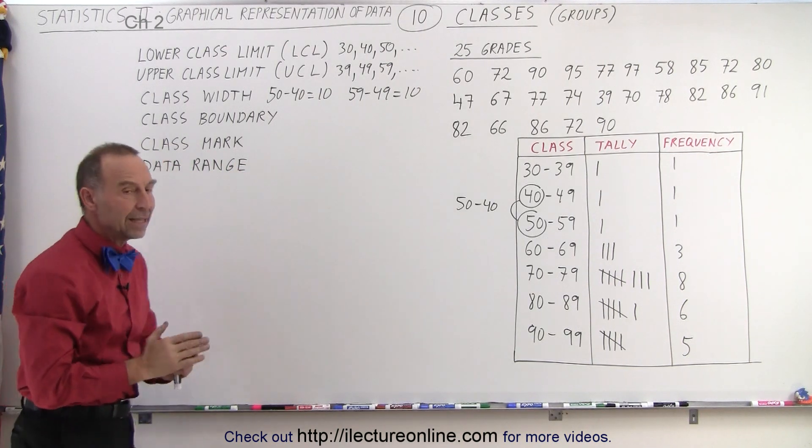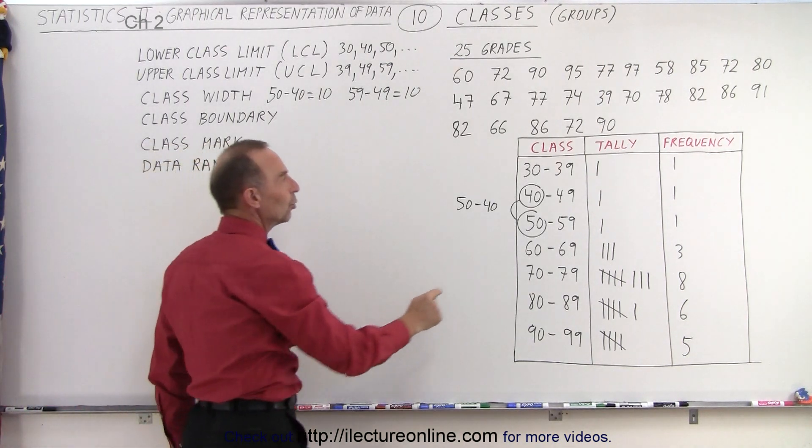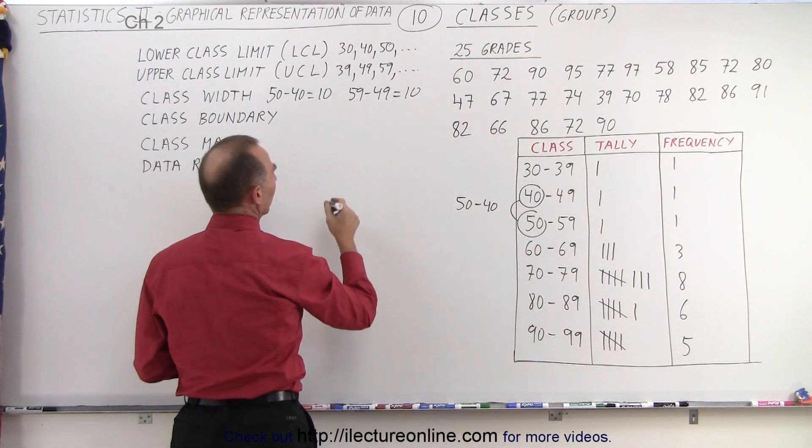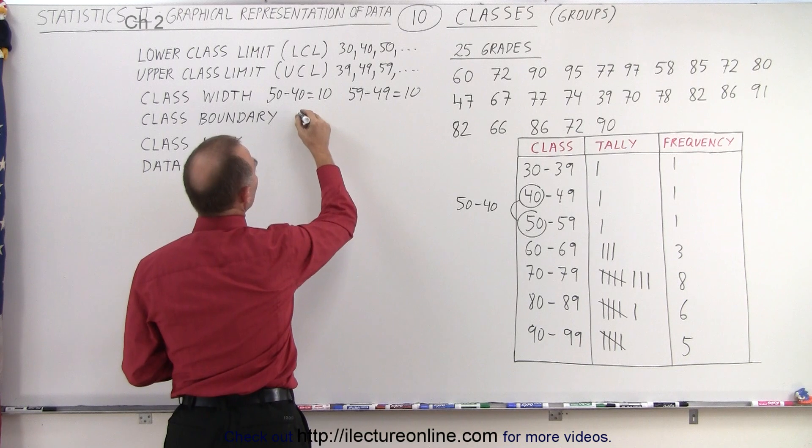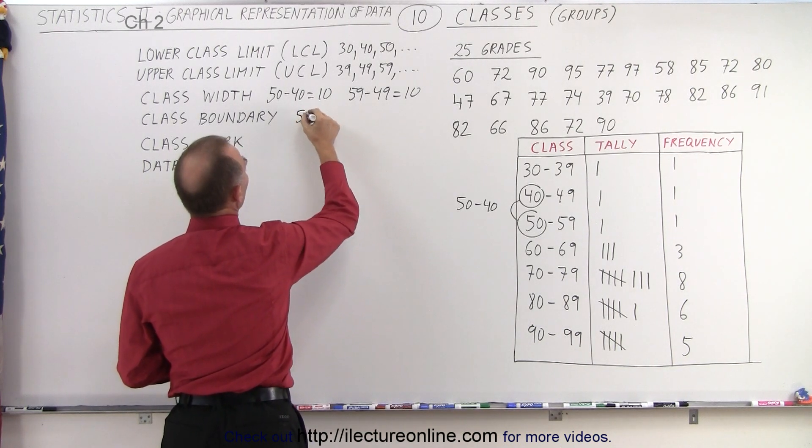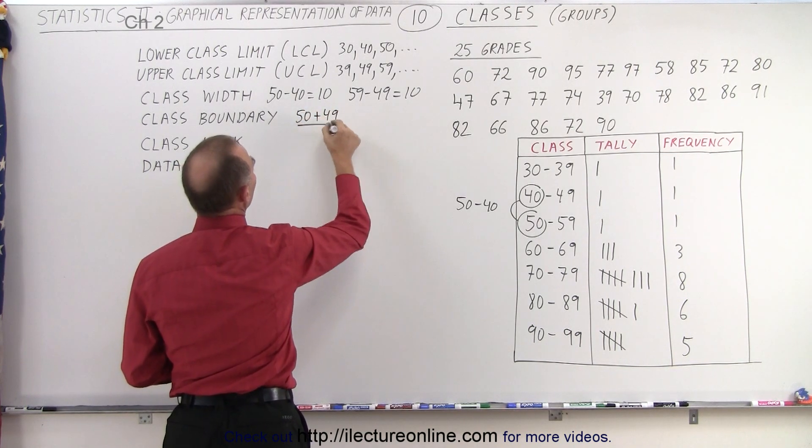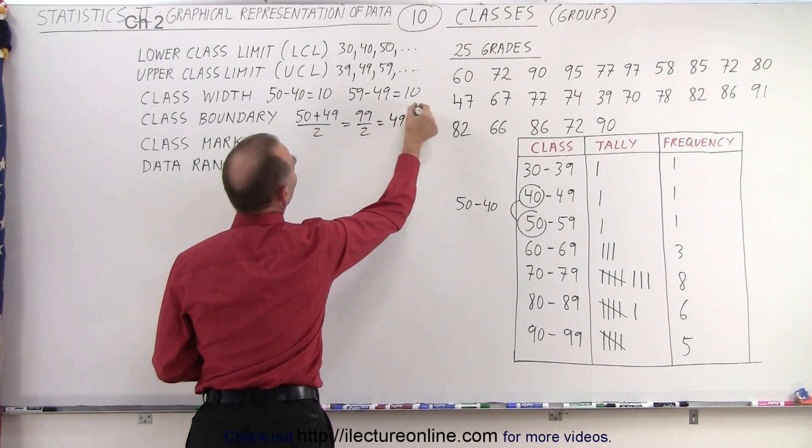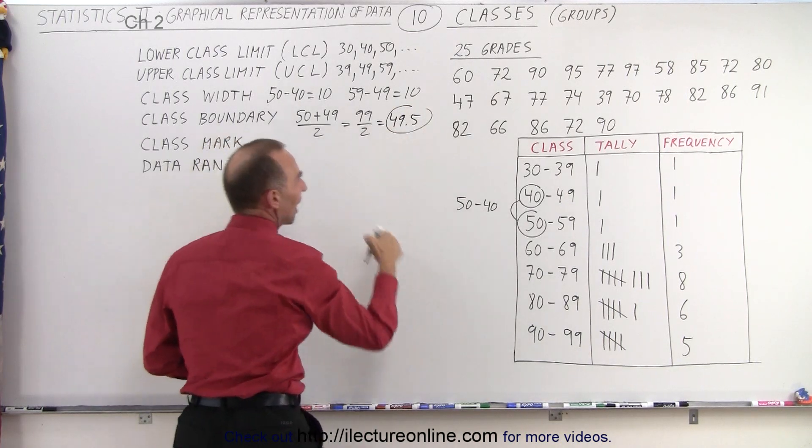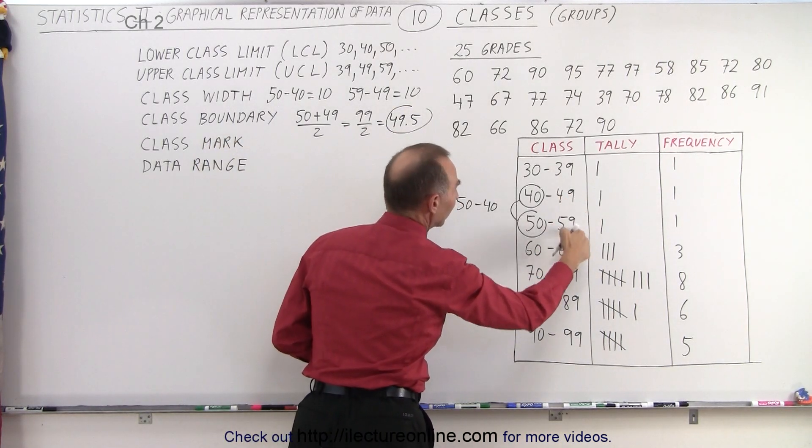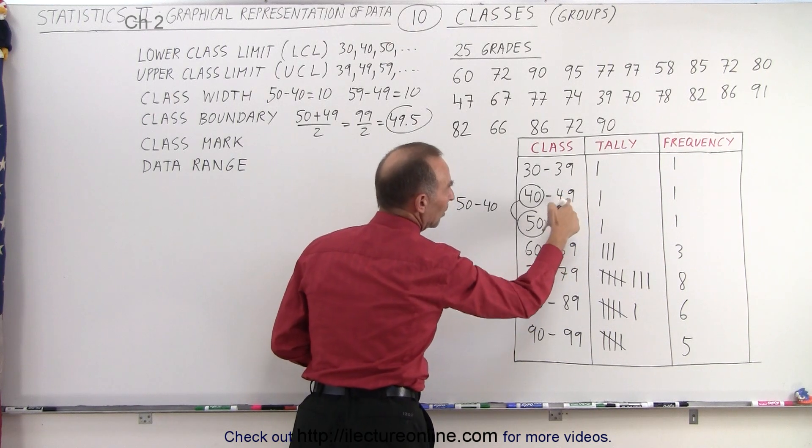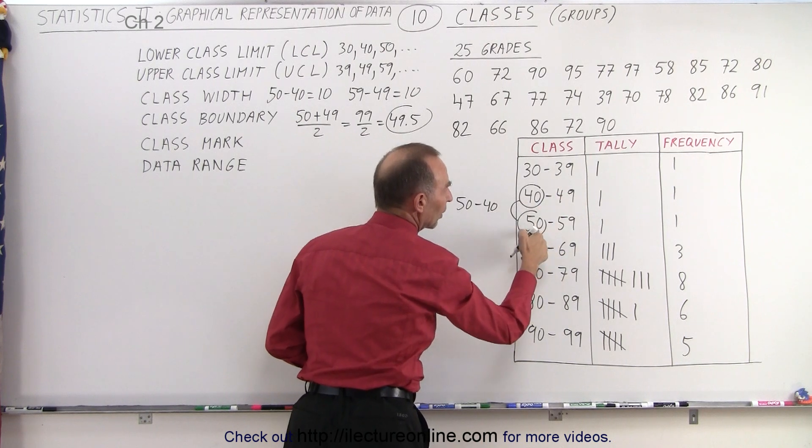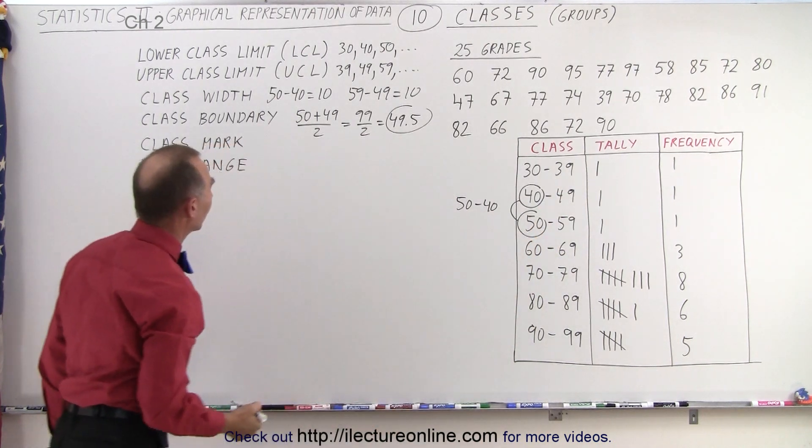The class boundary is the halfway point between the upper limit of one class and the lower limit of the next class. So in other words the halfway point would be you add the two together, you get 50 plus 49 divided by 2 which is 99 divided by 2 which equals 49.5. So that would be the class boundary between this class and this class. 49.5 is the halfway point between 49 and 50, the upper class limit of this class and the lower class limit of that class.